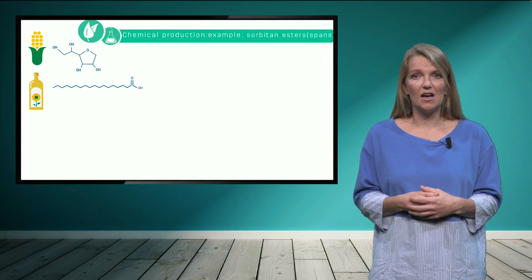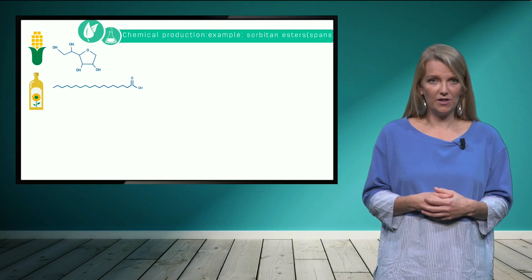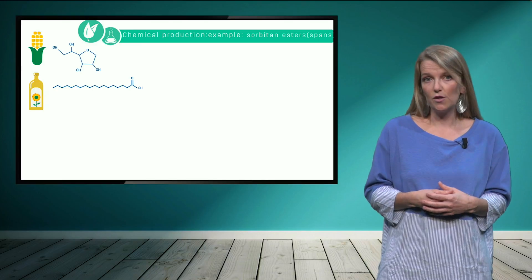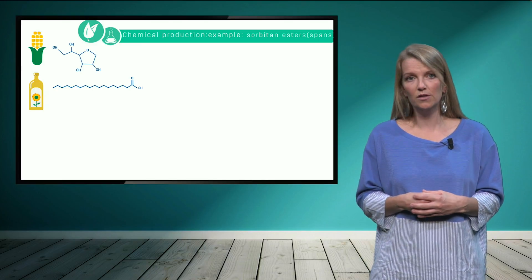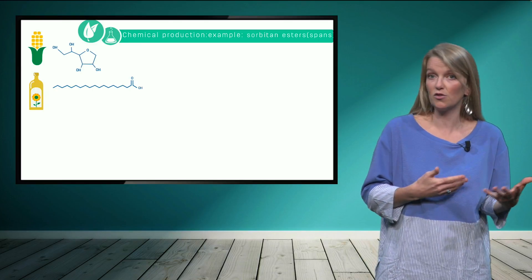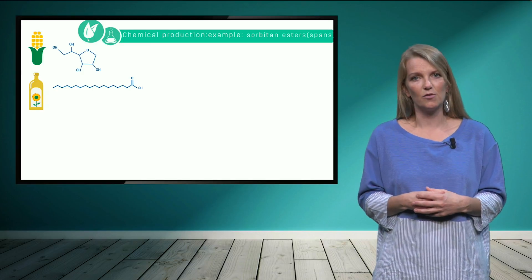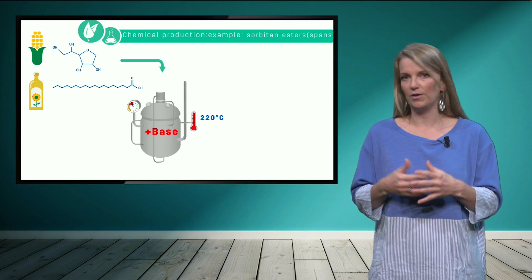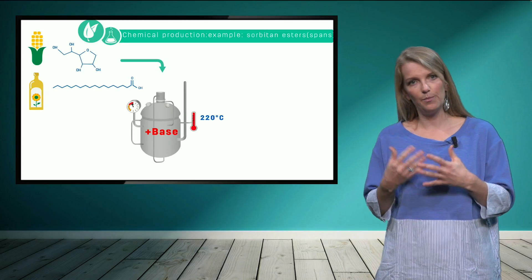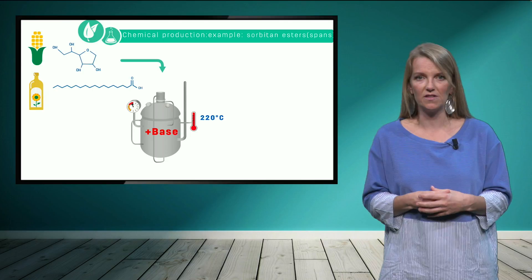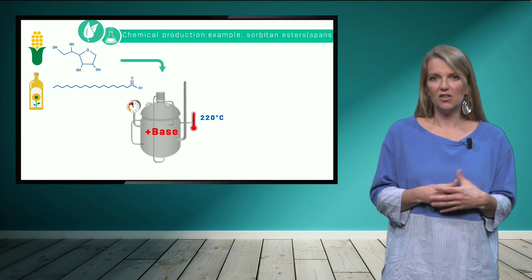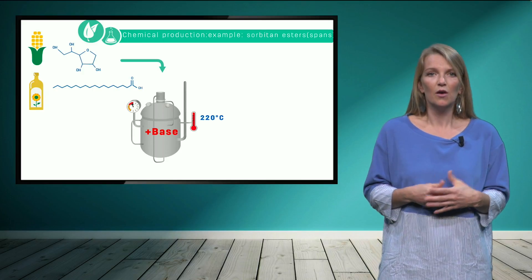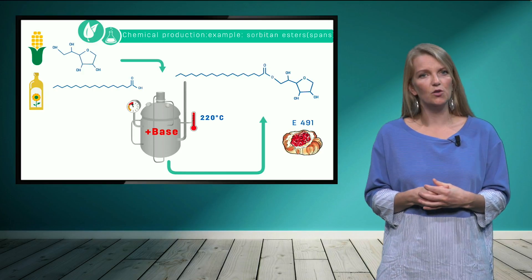A second example of a chemically produced biosurfactant are the so-called SPANS or sorbitan esters. Here also a sugar — in this case sorbitol, which is derived from glucose and thus corn — and fatty acids derived from for example sunflower oil, are combined in a chemical reactor again. The reaction takes place at high temperatures and under basic conditions. After purification or downstream processing, which involves the use of organic solvents again, we end up with products that are mainly used in foods.